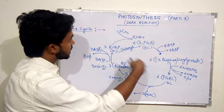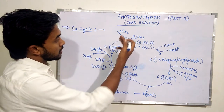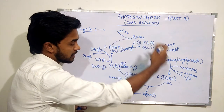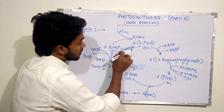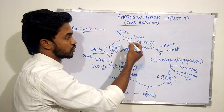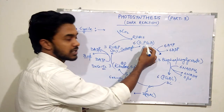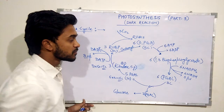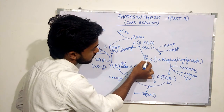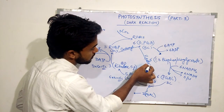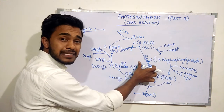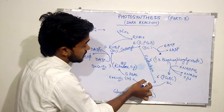This is the whole cycle of the C3 cycle — it starts from CO2 and ends with the regeneration process, and again and again this process takes place. The first step is carboxylation, from RuBP to 3-PGA. The second step is reduction, and the third step is regeneration.